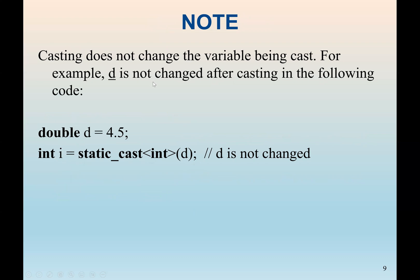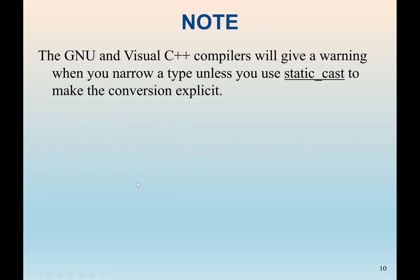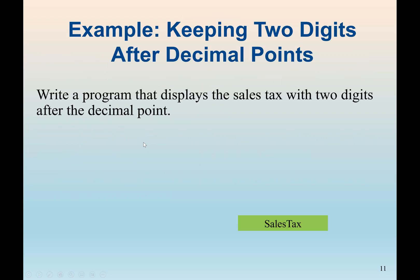Casting does not change the original variable. For example, if d equals 4.5 and we cast d to int, that does not mean d is now int — d remains a double. If we want to store the integer result, we declare a separate int variable. Also, GNU and Visual C++ compilers will give a warning when doing type narrowing unless you use a static cast to make the conversion explicit, since narrowing means we lose part of the value.